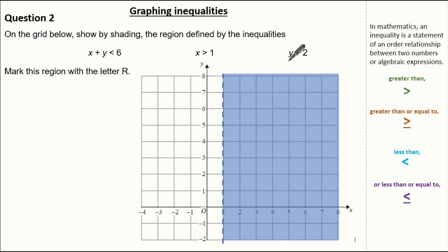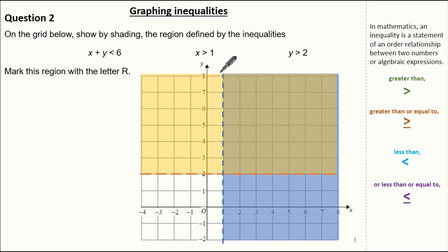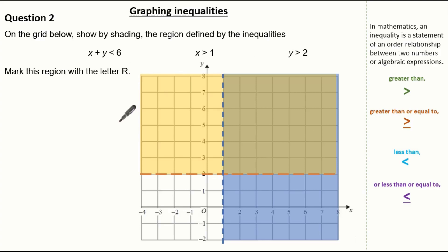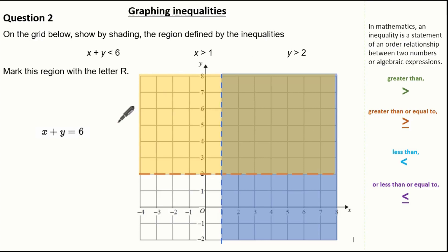Next, y is greater than 2: we know it's a dotted horizontal line at y equals 2. Drawing this in, you can see the region of y values which are greater than 2. The region which satisfies both of these inequalities so far is where I've double shaded. Now let's have a look at x plus y is less than 6 — this is a little bit harder than a horizontal or vertical line, so I'm going to draw the equation x plus y equals 6 first, and then identify the region where x plus y is less than 6.